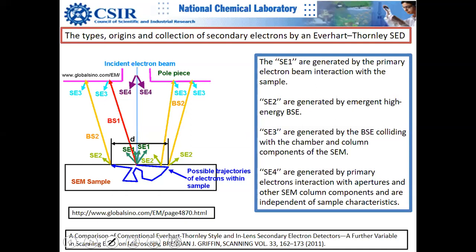Secondary electrons are of primarily three types. SE1 are ideal — generated when primary electrons interact directly with sample electrons. This is the desired signal. SE2 are secondary electrons generated by backscattered electrons as they exit the sample — they are labeled SE2.